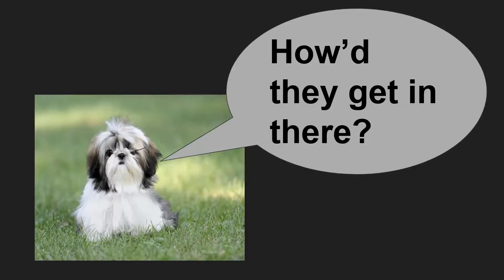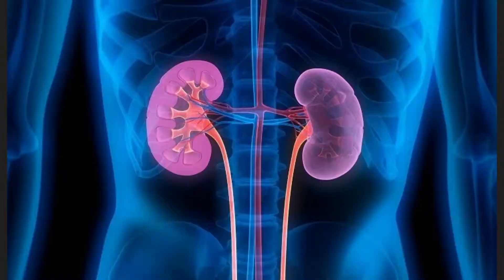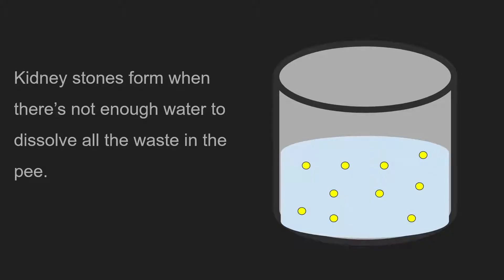Now the big question: how do they get in there? First, we have to recognize that the kidneys collect and filter out waste circulating in our blood. Kidney stones form when there's not enough water to dissolve all the waste in the pee.